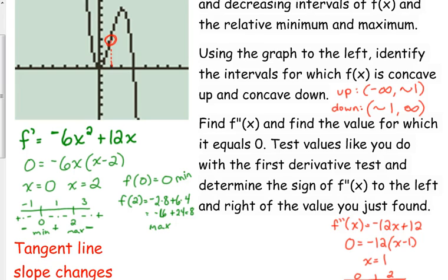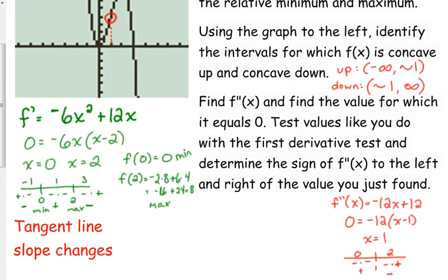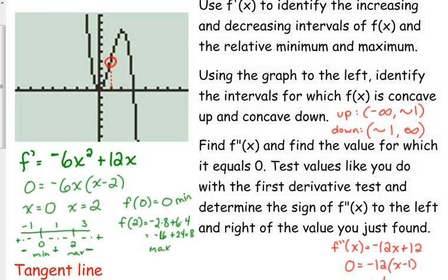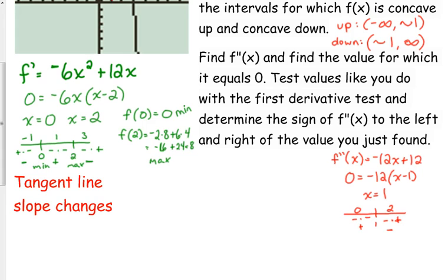Now I want to talk about how the tangent line slopes change here, so we're going to work with the first derivative for a minute. Let's plug in some specific values. Our graph looks like negative 2 is about as far as it goes in this window, so I'm going to test f prime of negative 2, compare f prime of negative 1, f prime of 0, 1, and 2. I'm going to find their exact values because the derivative evaluated at a point is the slope of the tangent line of that curve at that point.